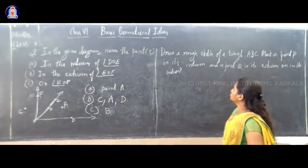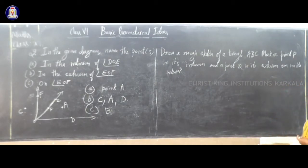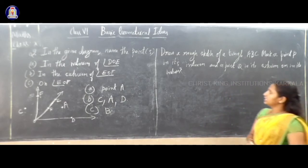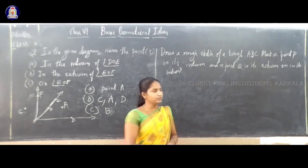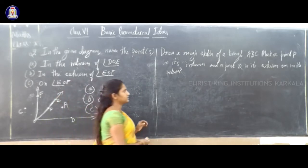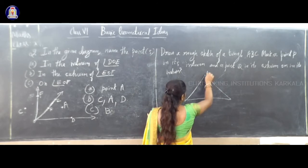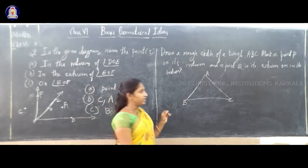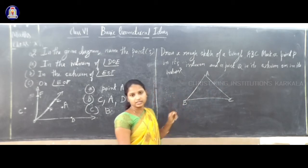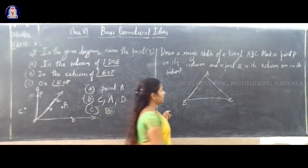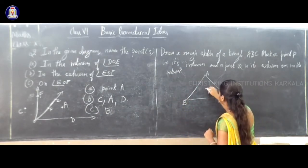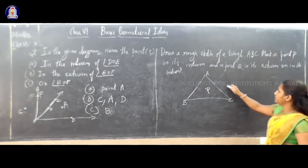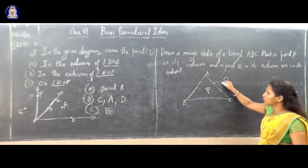The second question: draw a rough sketch of triangle ABC, mark a point P in its interior and a point Q in its exterior. So first you have to draw a rough sketch of a triangle ABC. You can draw a triangle, name the vertices A, B, and C. So ABC is a triangle. Mark a point P inside the triangle — P is inside the triangle — and a point Q in its exterior, meaning outside the triangle. You can represent point Q outside the triangle.